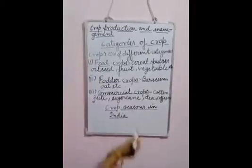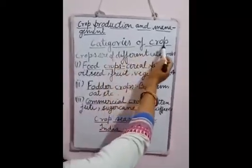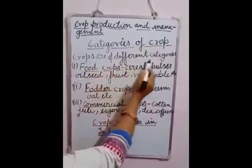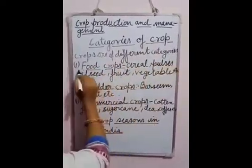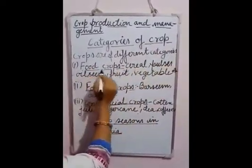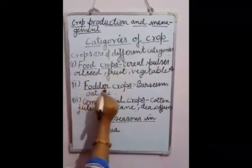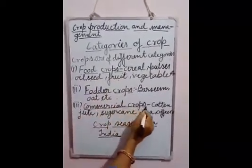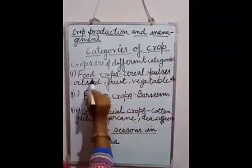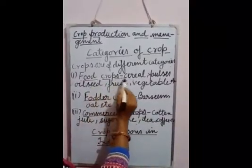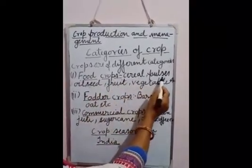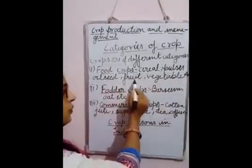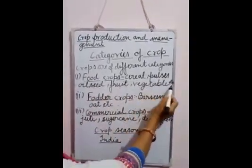Now let us come to the topic: categories of crops. Crops are of different categories. First is the food crop, second is fodder crops, and third is the commercial crop. Food crops include cereals, pulses, oilseeds, fruits, vegetables, etc.